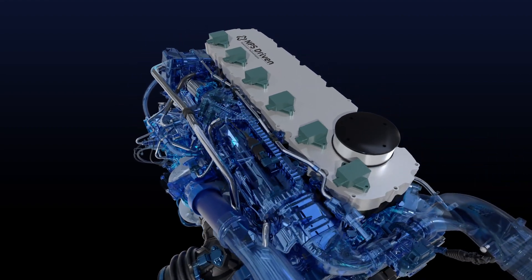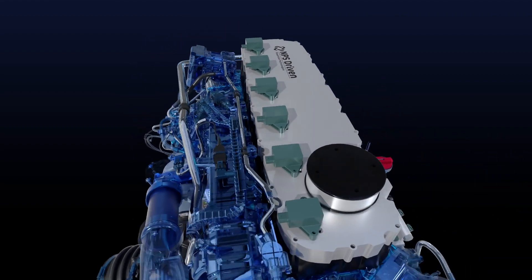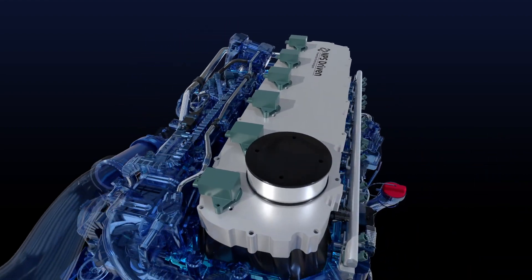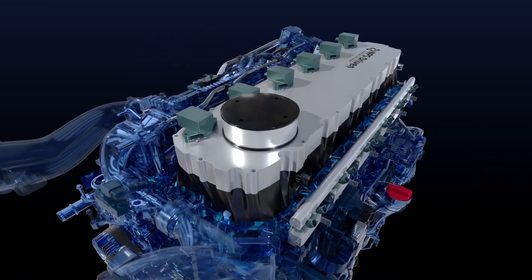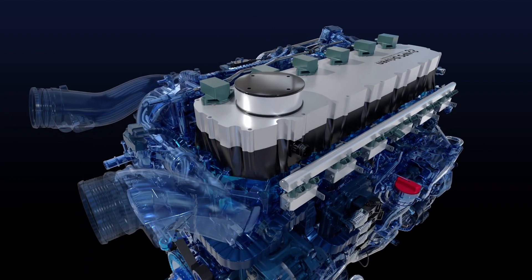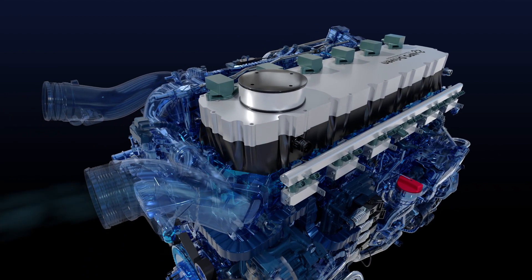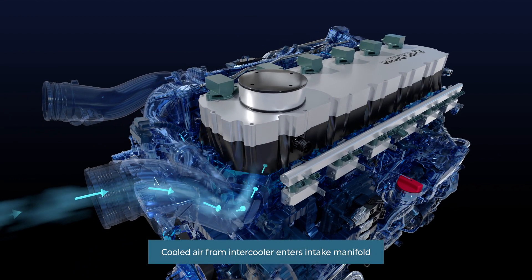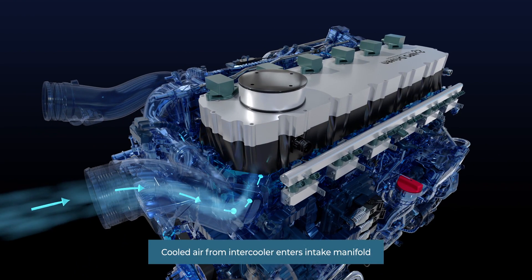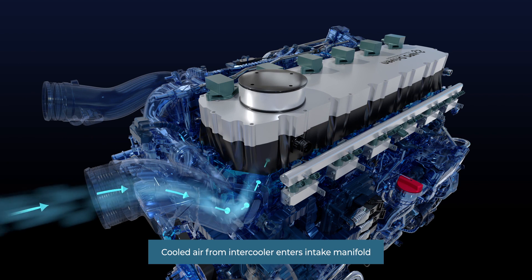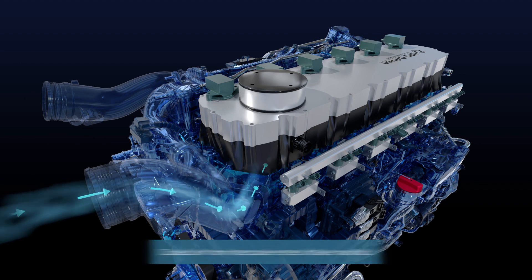This animation demonstrates the operation of a hydrogen internal combustion engine. First, cooled air from the intercooler enters the intake manifold.